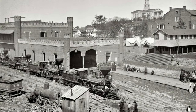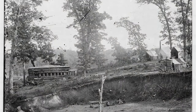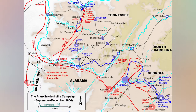In the autumn of 1864, the Confederate Army, led by General John B. Hood, set its sights on Tennessee. This strategic move was aimed at capturing Nashville and potentially crossing the Ohio River into Kentucky.